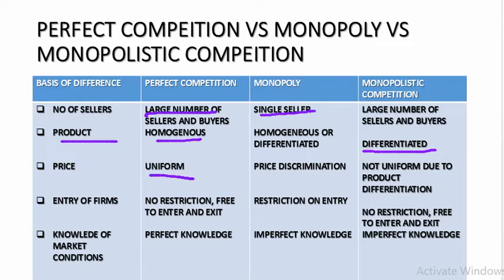Under perfect competition, the price is determined by the industry — whether you buy from Batinda, Delhi, or Calcutta, the price will be same. Under monopoly, the monopolist has the power to charge different prices for the same product and can opt for price discrimination. Under monopolistic competition, due to product differentiation, price may not be uniform. Under perfect competition, any firm can enter or leave — no restriction. Under monopoly, no firm can enter — there are barriers. Under monopolistic competition, there is no restriction; any firm can enter or leave.